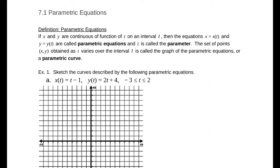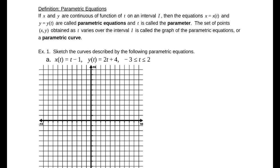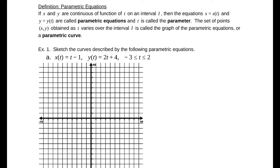The idea here is we have two functions that depend on some other quantity. In example 1, we're given two equations, one to represent the x values, one to represent the y values, and a range for t values. We'll begin with a chart. We have our t values, our x values, and y of t. We're going to evaluate from negative 3 to 2.